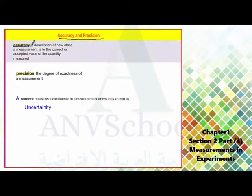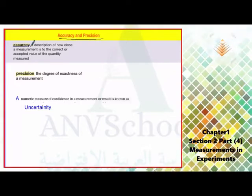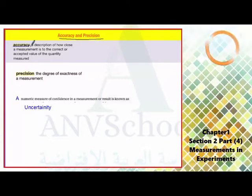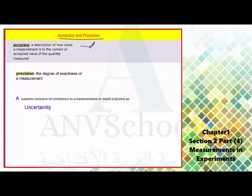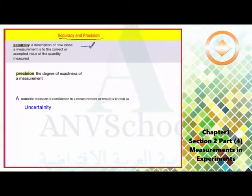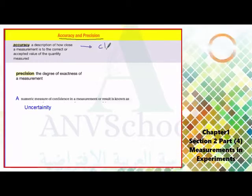So the way they are very close to the exact value is called accuracy. Accuracy describes how close a measurement is to the exact one. Is the measurement very close to the exact one or far away from the exact one?